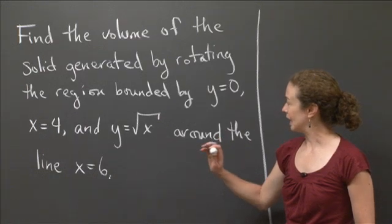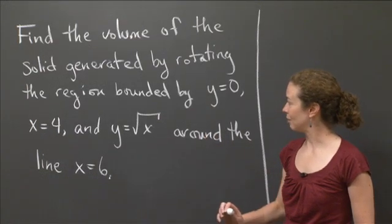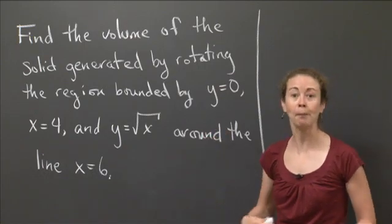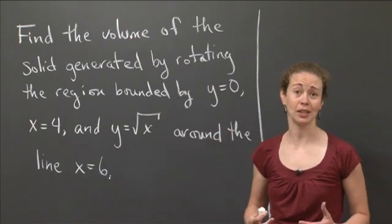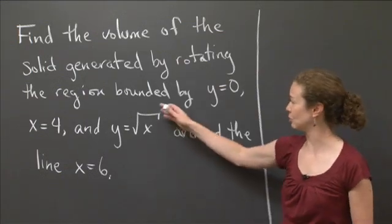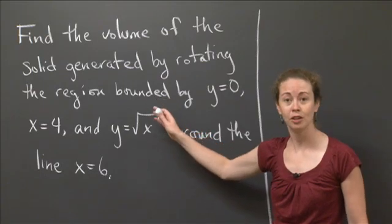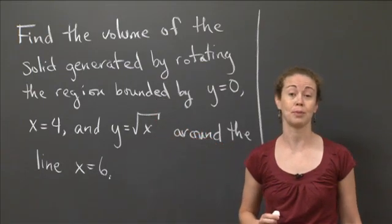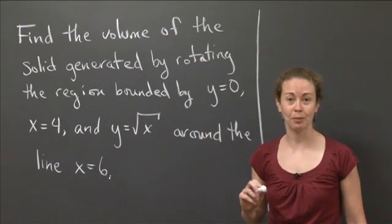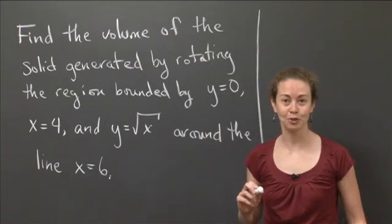When you're doing this kind of problem, first get a rough sketch of the region so you have some picture of what's actually going to happen. You don't necessarily need a three-dimensional picture, but at least have the two-dimensional region and understand where the rotation line is with respect to that region. I'll give you a little bit of time to work on that problem, and when I come back, I'll show you how I do it.